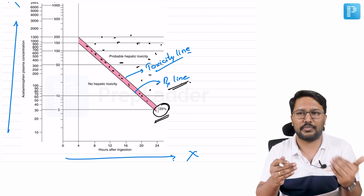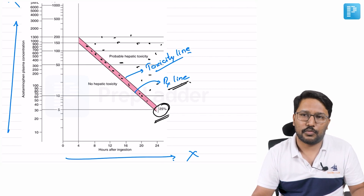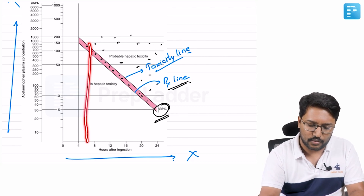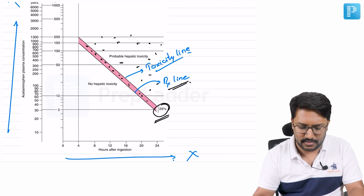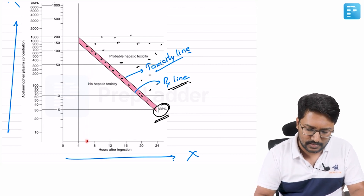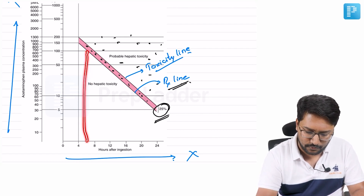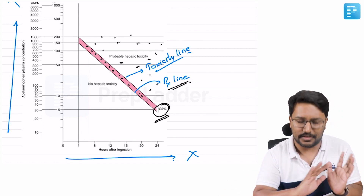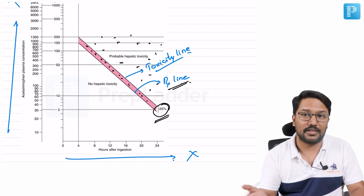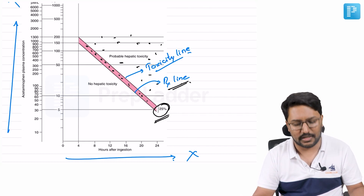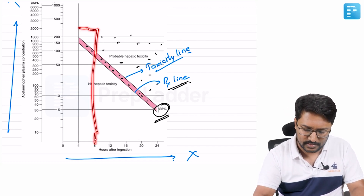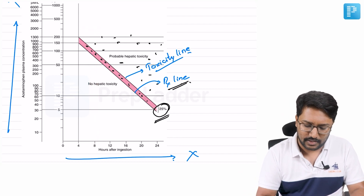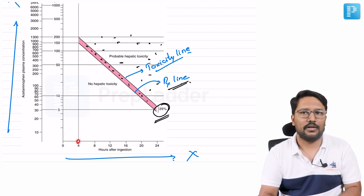We only draw the first paracetamol sample four hours after consumption. If a patient presents six hours after ingestion, you can immediately draw levels and plot them. For example, if levels are 100 at six hours, that falls below the treatment line — no N-acetylcysteine needed, just supportive care. If levels are 300 at eight hours, that falls above the treatment line — treat with N-acetylcysteine.